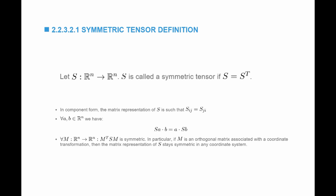If I have any matrix M that acts as a linear map from an n-dimensional vector space to an n-dimensional vector space, and if S is symmetric, then M^T S M is also symmetric. In fact, if M is an orthogonal matrix — a coordinate transformation matrix — then the matrix representation of S stays symmetric in any coordinate system. Recall that S prime in the new coordinate system equals Q S Q^T, so once S is symmetric it remains symmetric in any coordinate system.